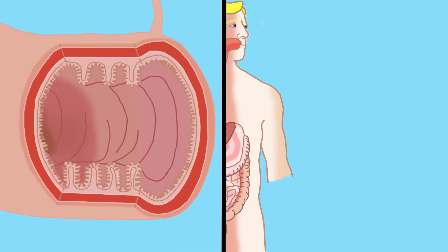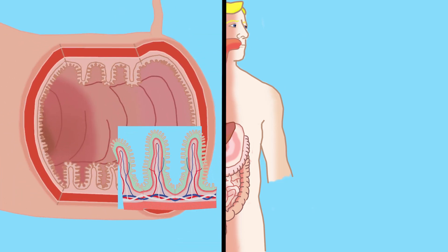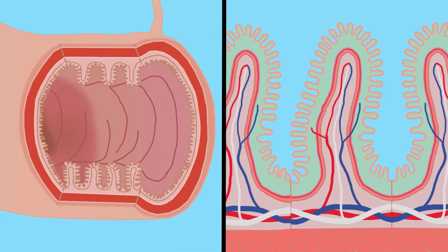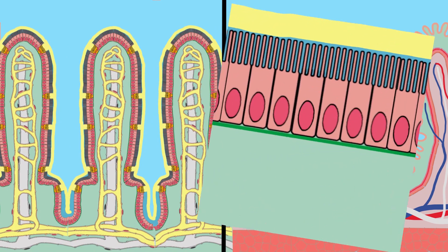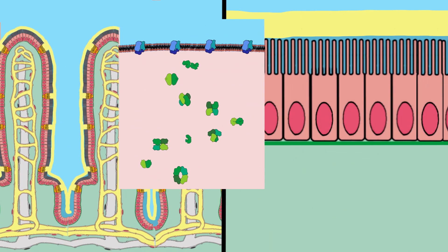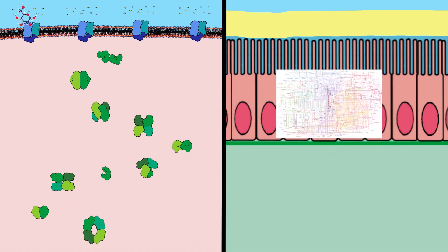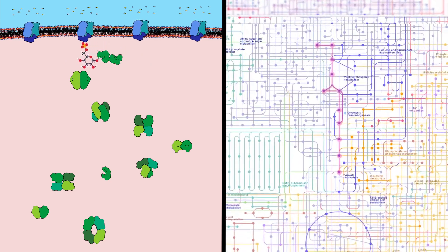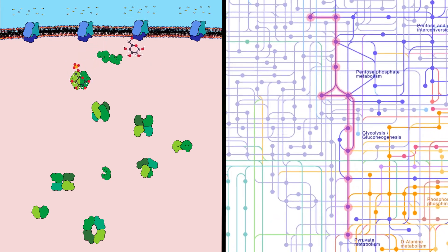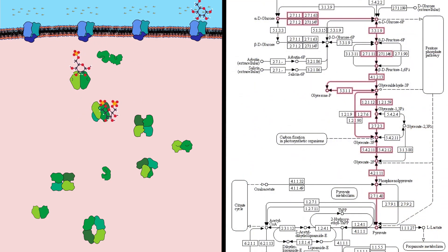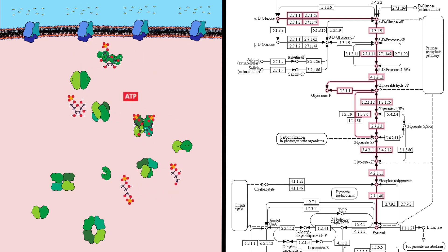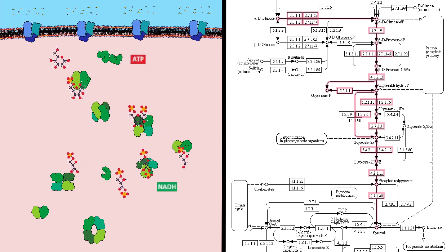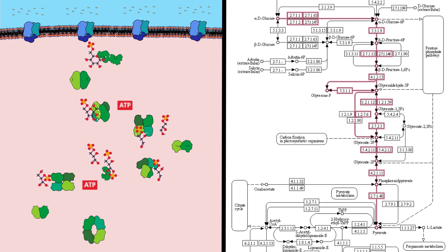Cells need energy to evade entropy and stay alive. This energy is extracted from breaking and connecting chemical bonds from the molecules we eat. Sugars are very important fuel molecules. Glycolysis is one of the main routes by which all cells begin to consume them to absorb their energy, producing ATPs and reduced NADH.